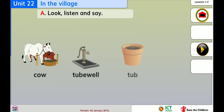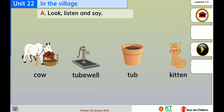Look, listen and say: cow, tube, well, tub, kitten. Kitten, tub, tube, well, cow.